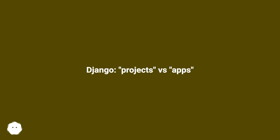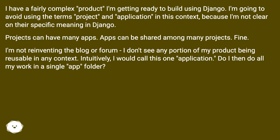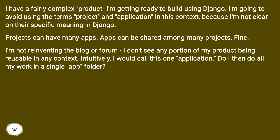Django projects versus apps. I have a fairly complex product I'm getting ready to build using Django. I'm going to avoid using the terms 'project' and 'application' in this context because I'm not clear on their specific meaning. In Django, projects can have many apps, and apps can be shared among many projects. I'm not reinventing the blog or forum — I don't see any portion of my product being reusable in any context. Intuitively I would call this one application. Do I then do all my work in a single app folder?